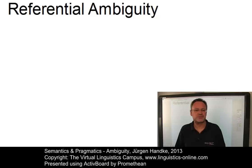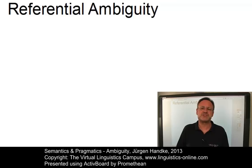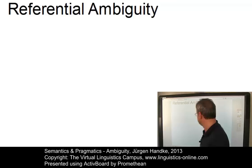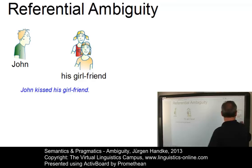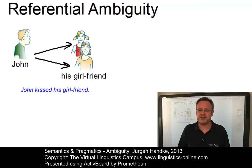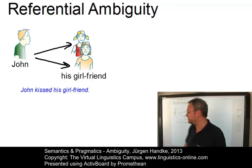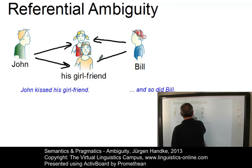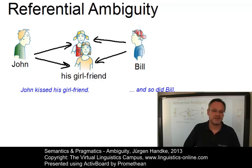A completely different type of ambiguity is referred to as referential ambiguity. The interpretation of sentences also depends on the referential properties of the words and constructions contained in them. Referential ambiguity arises when a word — mostly a pronoun — can refer to more than one entity in the same sentence, or to another sentence, or to another item in the world. In the example 'John kissed his girlfriend,' it is not clear who he kissed — his own girlfriend or the girlfriend of someone else? And if we add 'and so did Bill,' Bill can have kissed his own girlfriend or someone else's girlfriend.